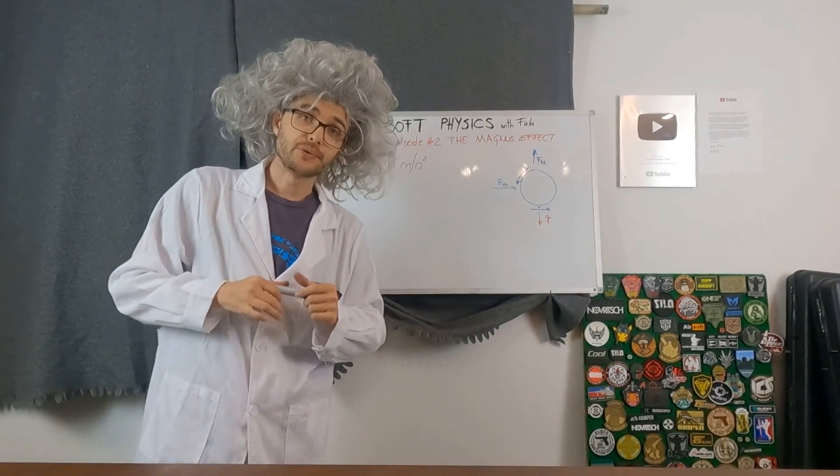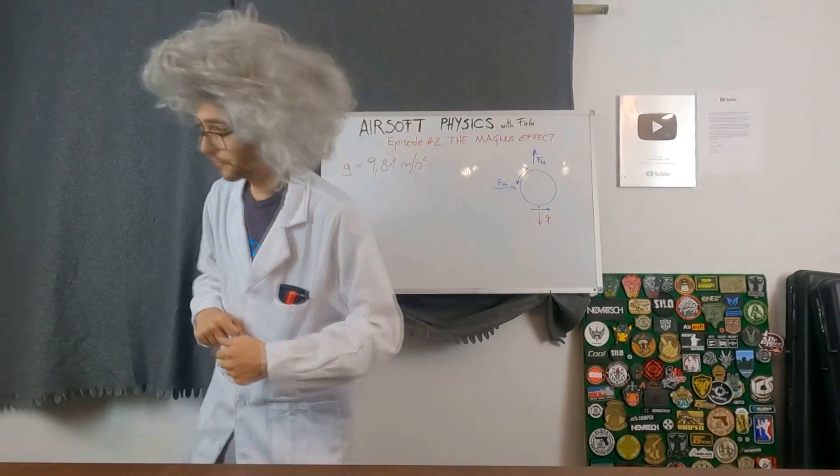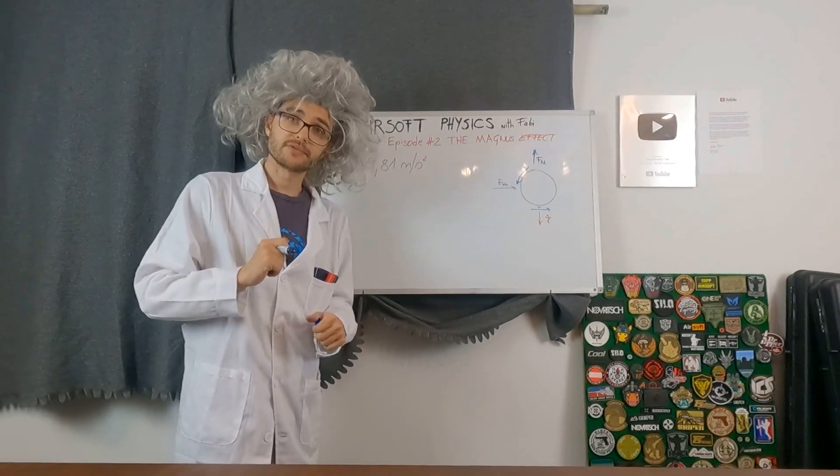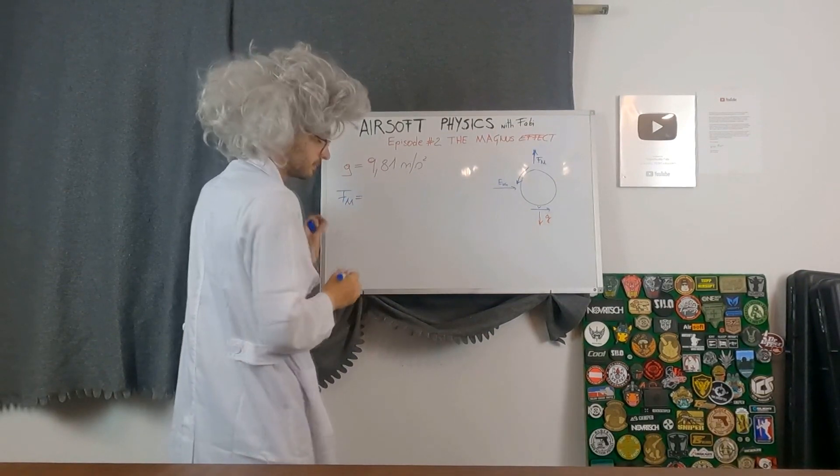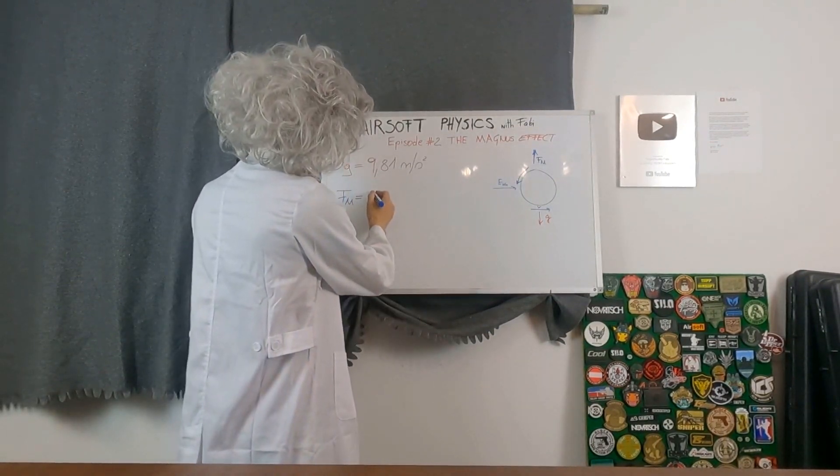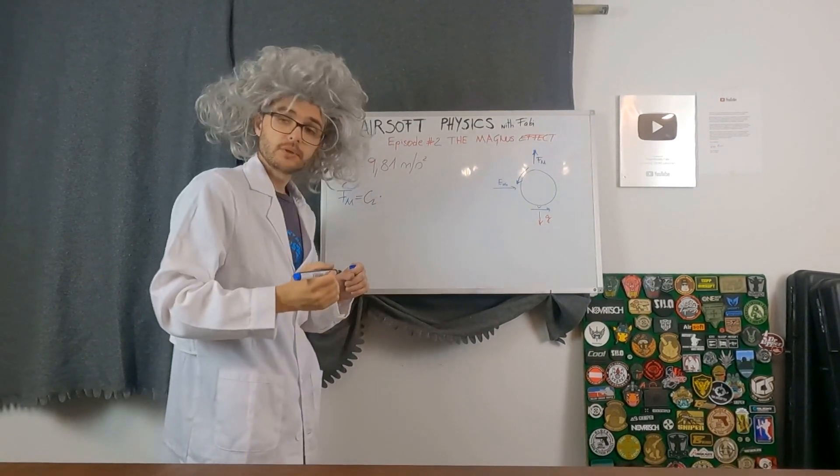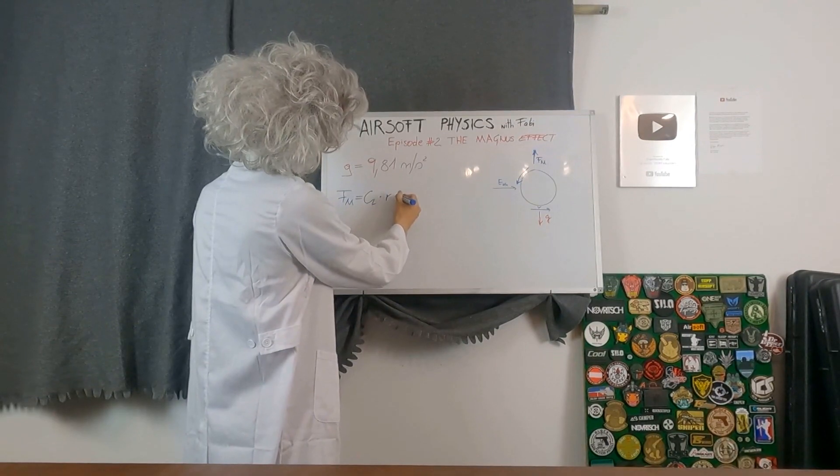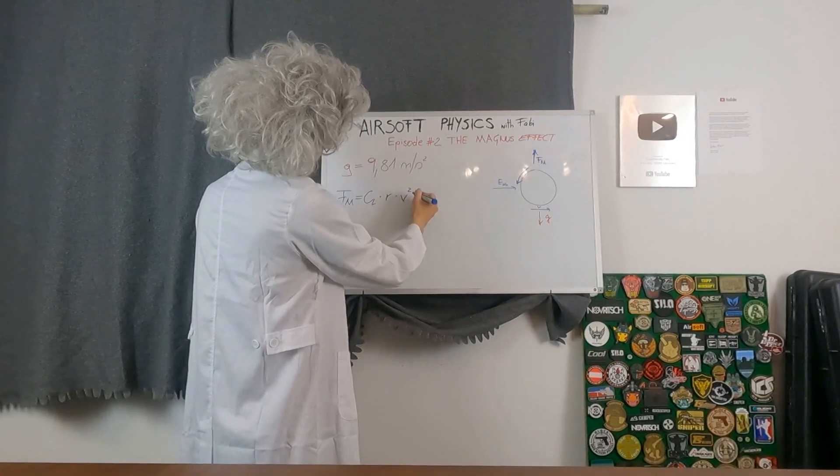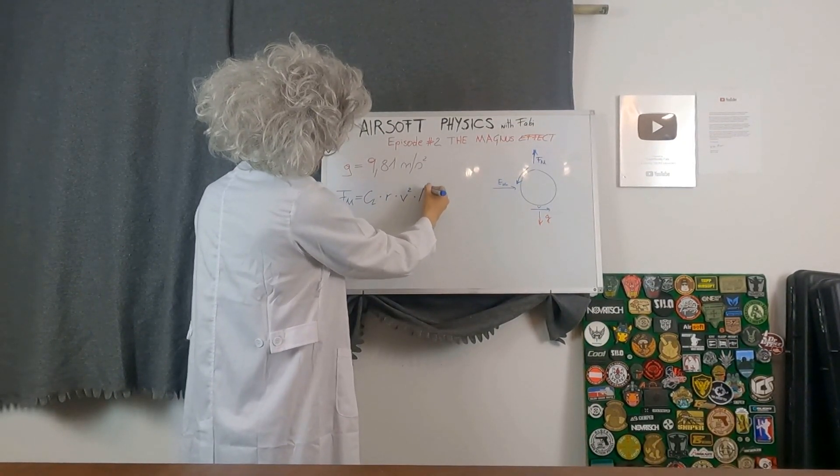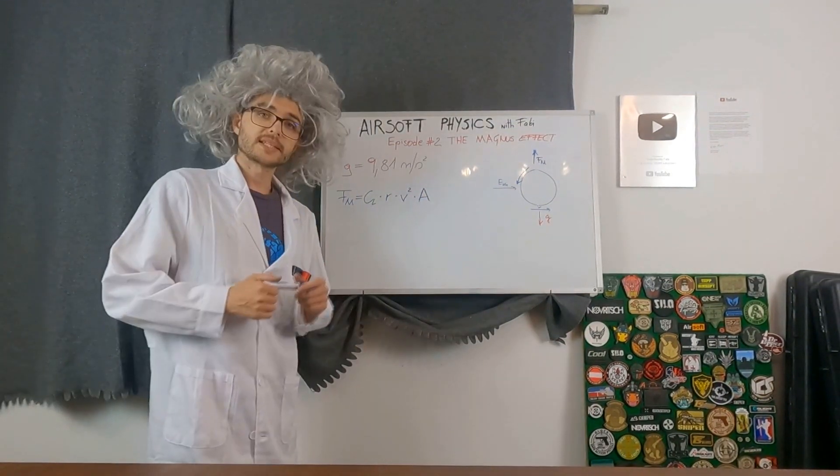Now that we know how the Magnus force applies to our BB, it's time to calculate the Magnus force. And the equation for the Magnus force looks like this. Fm equals Cl, which is the lift coefficient, which we will talk about soon, multiplied by the air density, multiplied by the velocity of the projectile squared and multiplied by the cross-sectional area of the object.